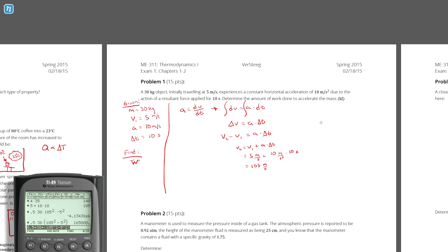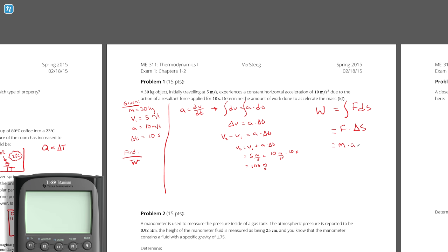Let's say I had used the definition of work instead. Work is the integral of force with respect to distance. Since force is constant here, it comes out of the integral, giving work equals force times displacement, delta s. The force equals mass times acceleration, both of which are known. So if I can figure out the displacement over the 10-second process, I can find the work done.